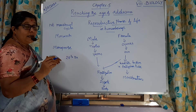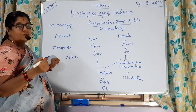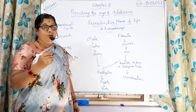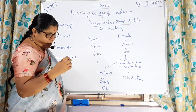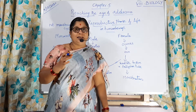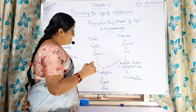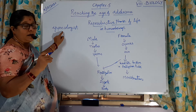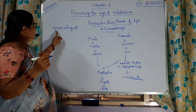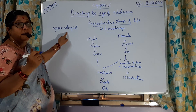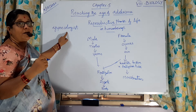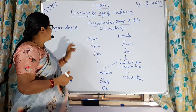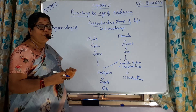If the menstrual cycle is irregular for more than one year, we must consult a doctor specialized in treating problems related to the female reproductive system. The doctor who treats problems related to the female reproductive system is called a gynecologist. You must consult a gynecologist if you have irregular periods after one year. That is about the reproductive phase of life in human beings.